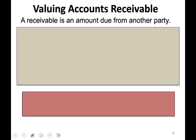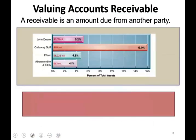Let me show you the percentage of receivables for certain companies — for example, John Deere, Callaway Golf, Pfizer, Abrakami, and Fitch. Notice that certain companies like Callaway Golf sell a lot on account; therefore, accounts receivable represent 16% of their total assets. Abrakami and Fitch, only 4%. So different companies will have different amounts of receivables depending on whether they sell on account or not.